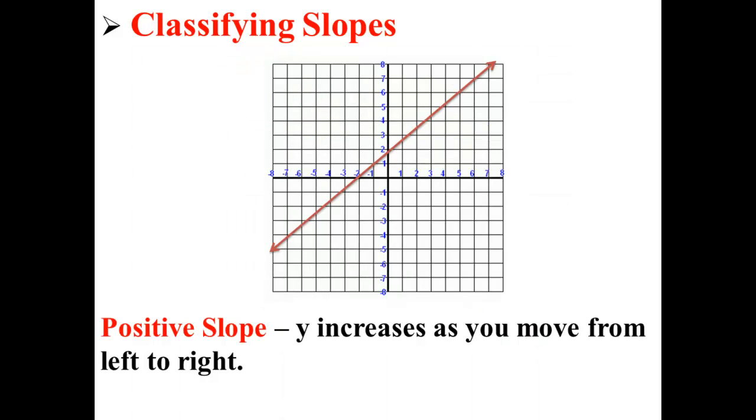In the first graph, our line has a positive slope. This means that y increases as you move from left to right.